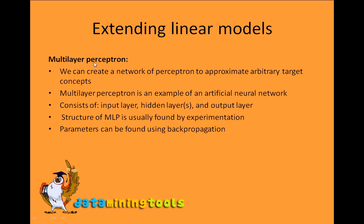The next topic is multilayer perceptron. We can create a network of perceptrons to approximate arbitrary target concepts. Multilayer perceptron is an example of artificial neural networks and consists of three layers: an input layer, hidden layers, and an output layer. A hidden layer can have more than one hidden layer. The structure of a multilayer perceptron is usually found by experimentation, while the parameters can be found using a technique called back propagation.